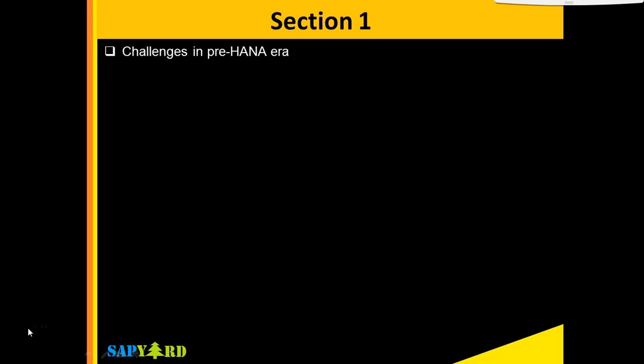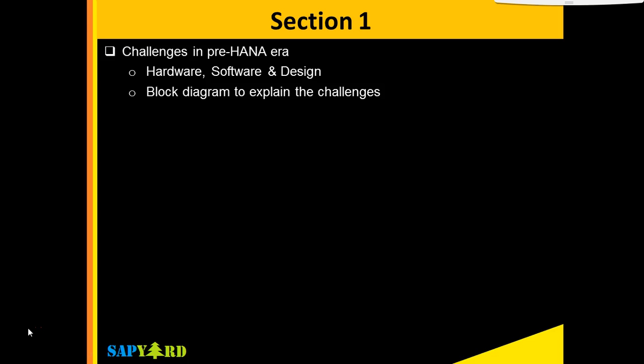We have divided this course into two sections. In the first section, we will check what were the challenges before the HANA era. We will look into the software, hardware and design issues during the pre-SAP HANA era. We will show you a diagram which will give you a better explanation of what were the issues in the pre-HANA era.